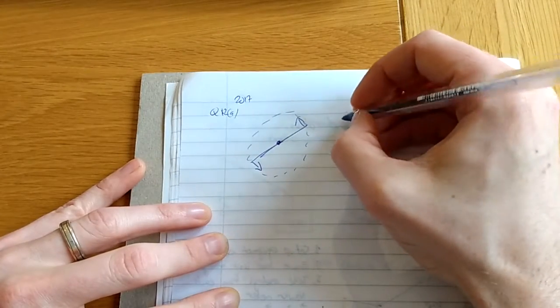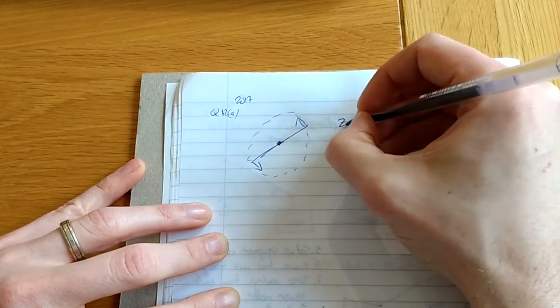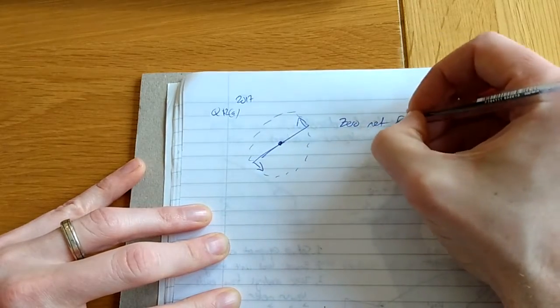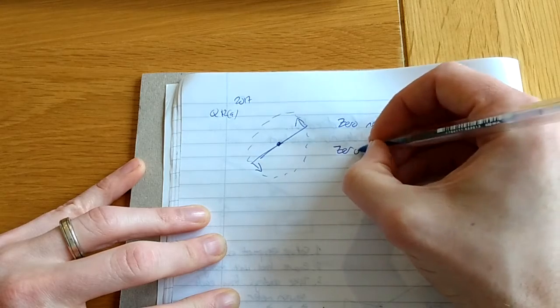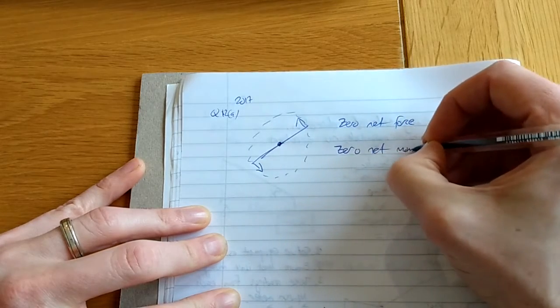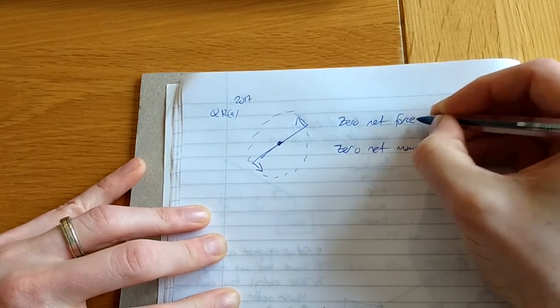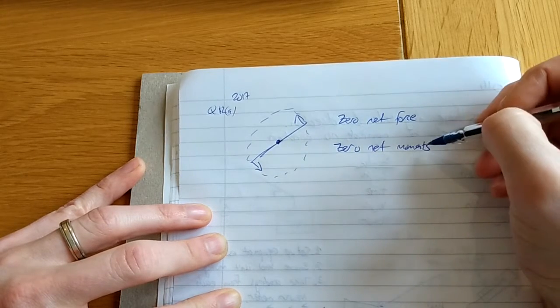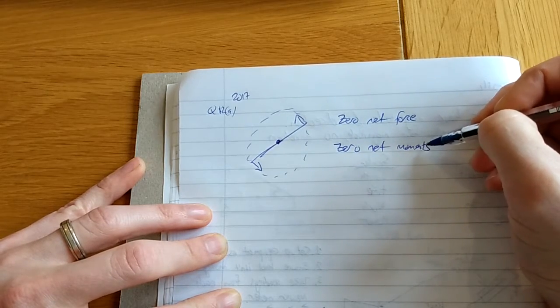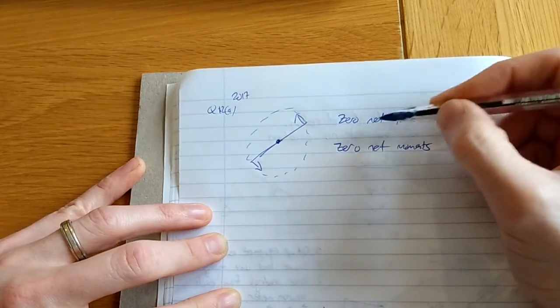Well, our laws of equilibrium say that there is zero net force, and then there is zero net moments as well. Upwards equal downwards, left equal right. And then any clockwise moments equal the anticlockwise moments. There is zero net forces.